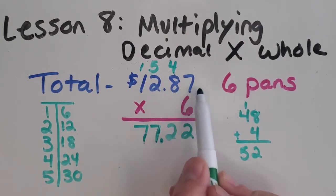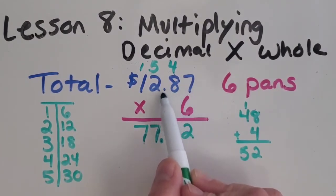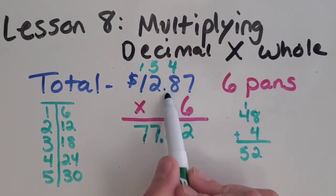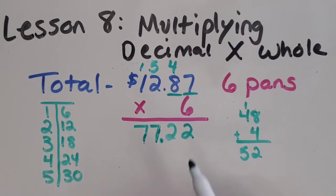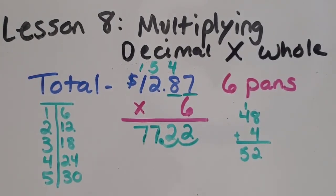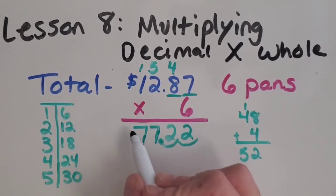$77.22 makes the most sense. Also, let me show you a strategy to figure it out for sure. So what I ask myself is how many decimal places are in my problem, in my two factors? So I see one, two, two decimal places. So my answer should also have two decimal places. So I kind of go here and then two and place my decimal. Great job helping me figure out that if I wanted to serve six pans of those nachos, it would cost $77.22. Thank you so much for helping me.